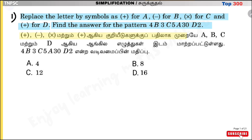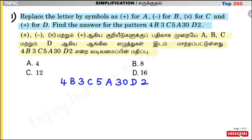Replace the symbols with letters a, b, c and d. The expression becomes: 4b is minus, 3c is multiplication, 5a is addition, 30 d2 is division. So we get: 4 minus 3 into 5 plus 30 divided by 2.